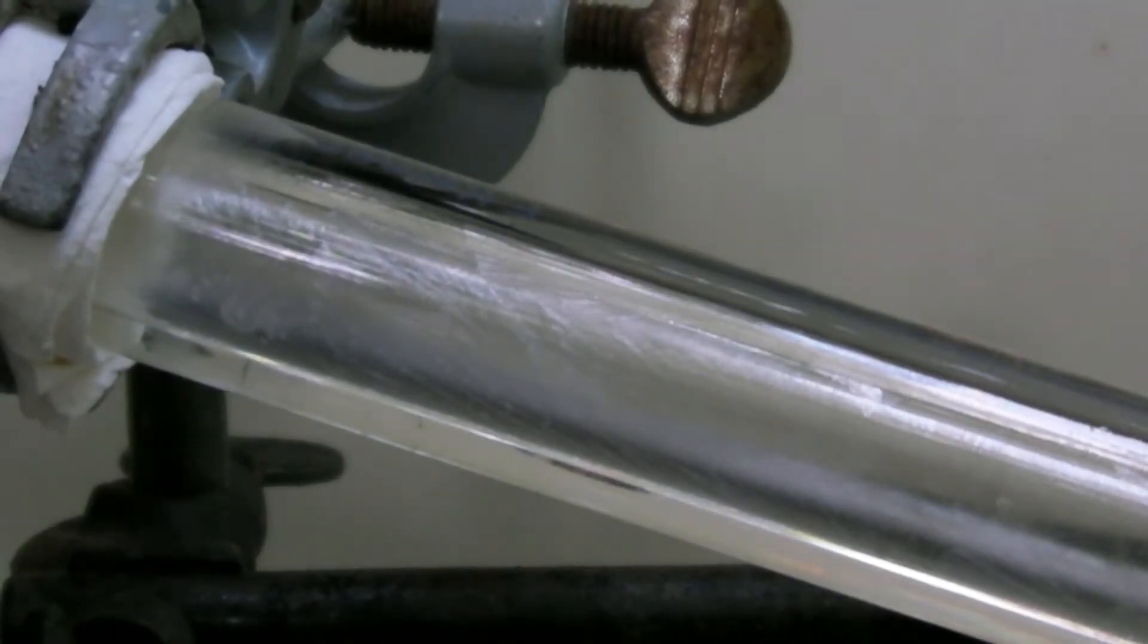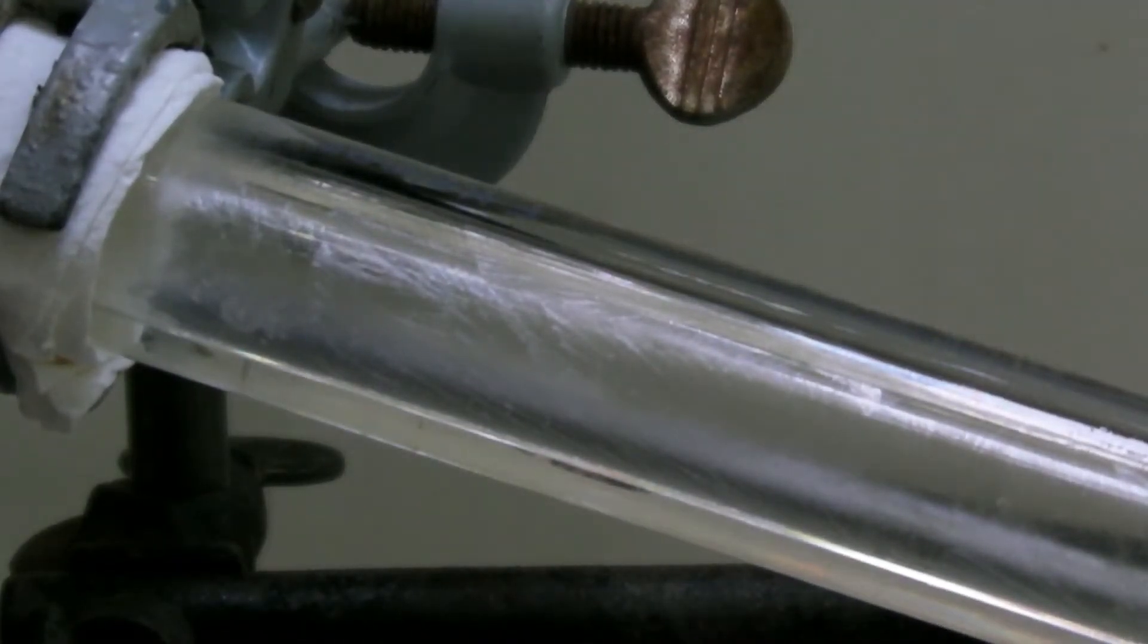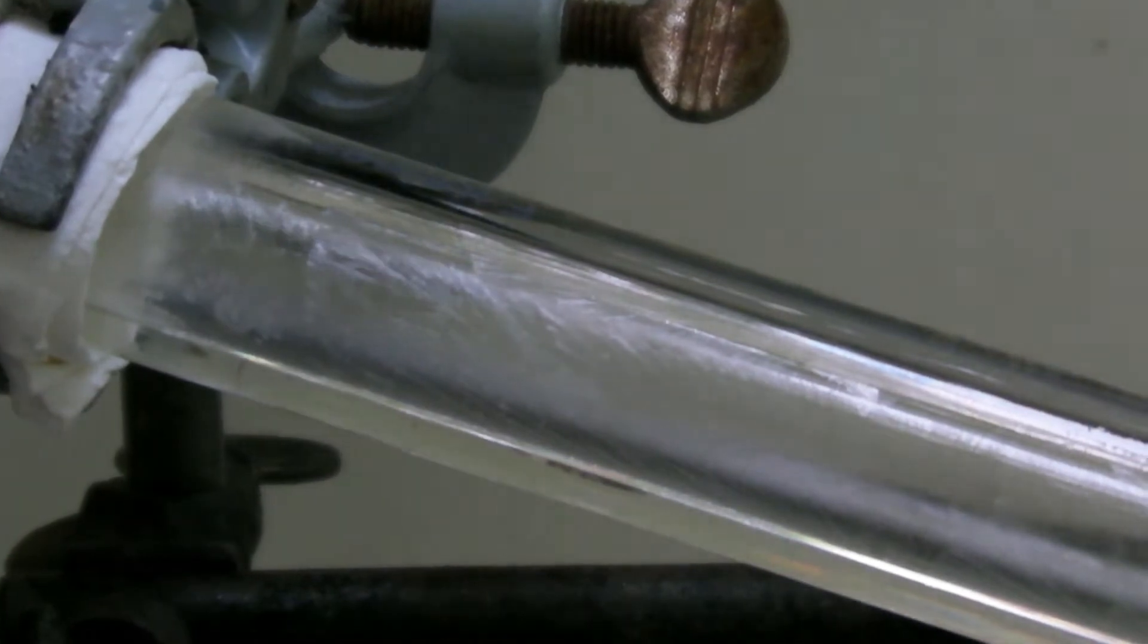Then needle shaped crystals began to form in the condenser, which was a sign that the temperature of the cooling water was too low.